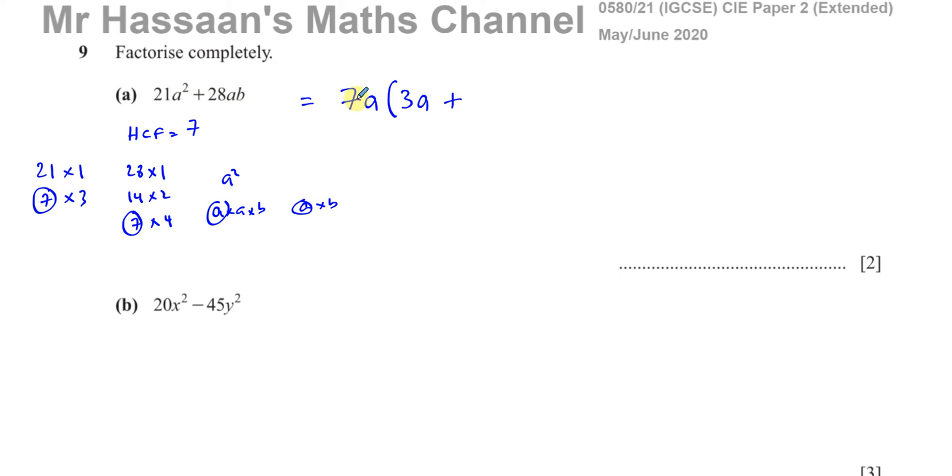And then what do I have to multiply 7a by to give me plus 28ab? Well, it must be positive, and it must be 4 there. 7 times 4 is 28. And when I multiply 7a by 4, I want to get 28ab. I need a b there as well.